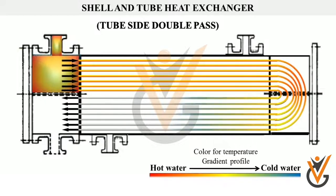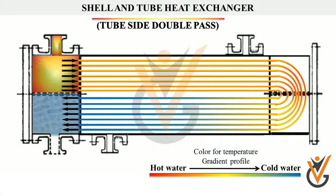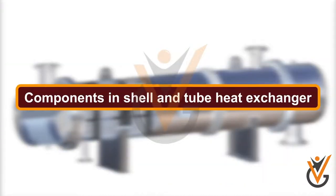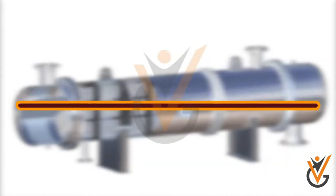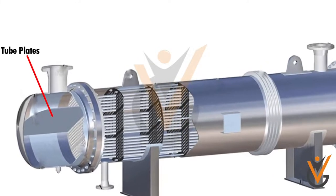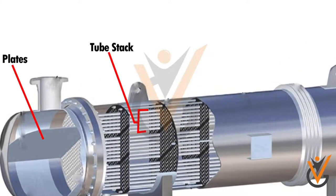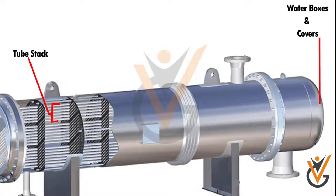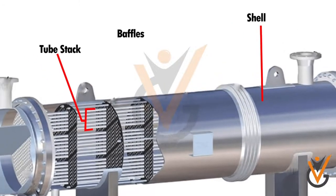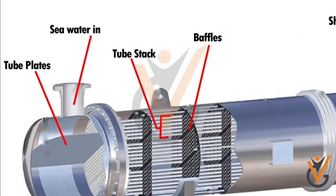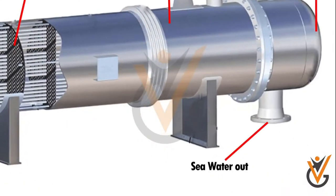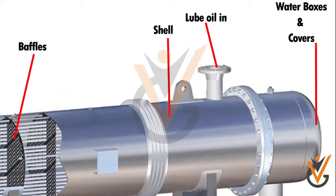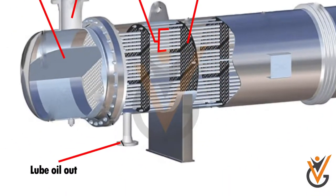Components in shell and tube heat exchangers: tube plates, tube stack, water boxes and covers, shell, baffles, sea water inlet and outlet, lube oil inlet and outlet.